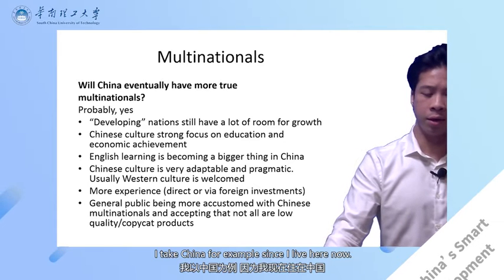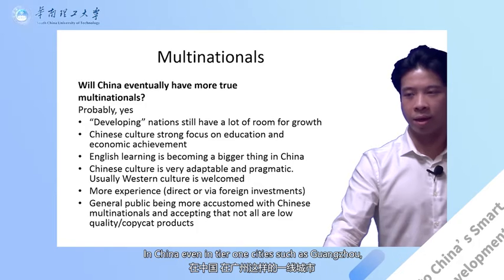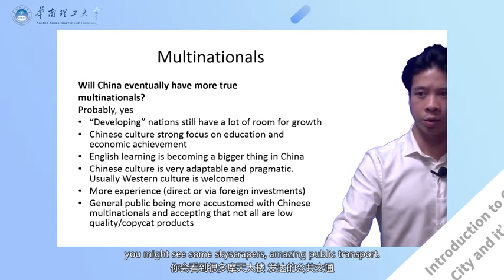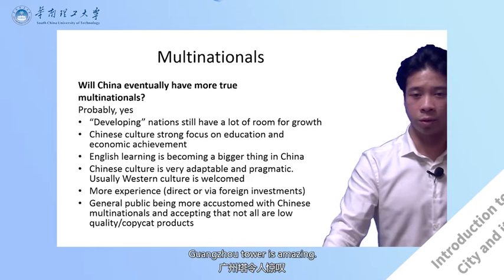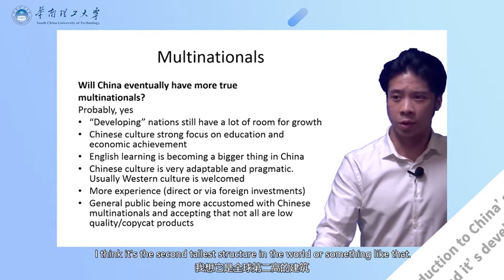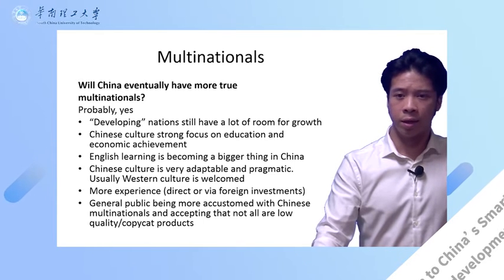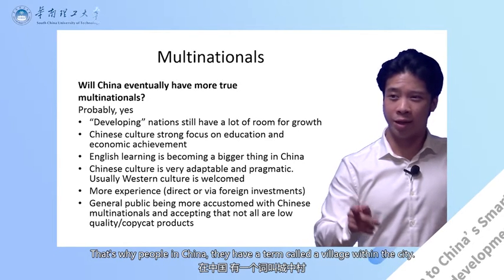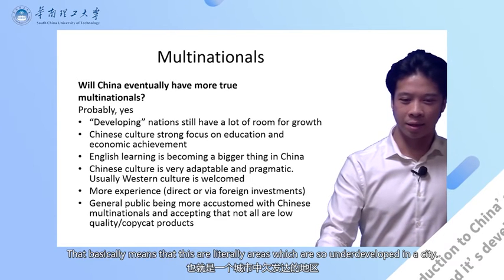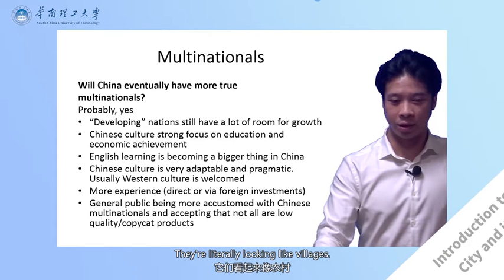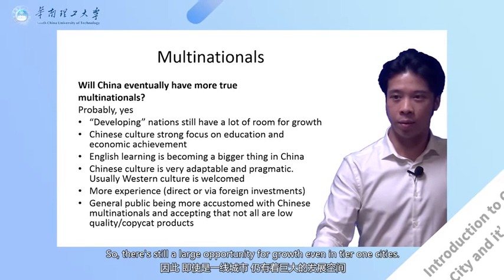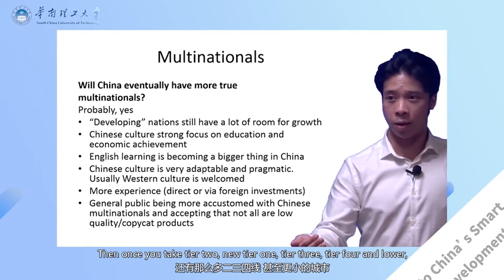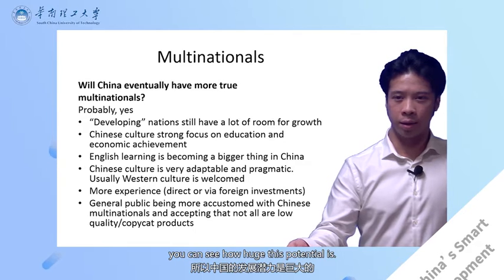People in China have a term called 'village within the city,' meaning there are literally areas which are so underdeveloped within the city that they look like villages. So there's still a large opportunity for growth, even in Tier 1 cities. And once you take Tier 2, New Tier 1, Tier 3, Tier 4 and lower, you can see how huge this potential is. Chinese culture has a very strong focus on education and economic achievement — many parents push kids to study hard, and it's sometimes actually cool to be nerdy in China. People are expected to achieve economically, which ties into face values.